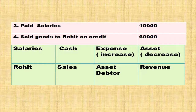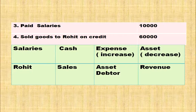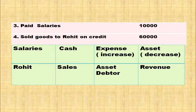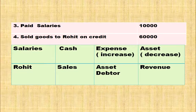Sold goods to Rohit on credit. Credit transaction — debtor increases. Rohit is a debtor; debtor falls under asset account. When asset increases, it will be debited. So, Rohit's account is debited. Sales is revenue for the business — when revenue increases, it will be credited. So, sales account is credited. Rohit: debit; sales: credit.